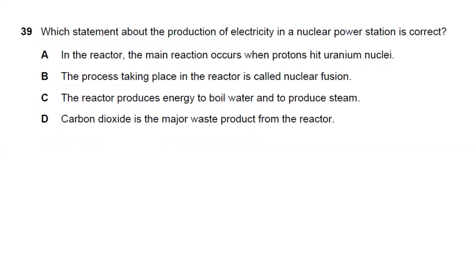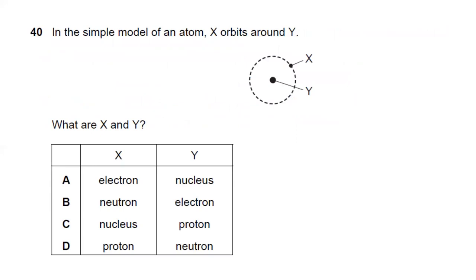Question thirty-nine: which statement about electricity production in a nuclear power station is correct? The main reaction is a neutron (not proton) hitting a uranium nucleus — nuclear fission, not fusion. The reactor produces energy to boil water and produce steam. Carbon dioxide is not a waste product of nuclear generation. Answer C is the best choice.